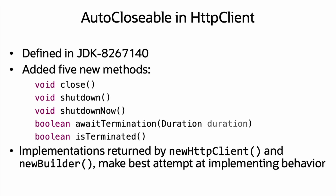The changes to HTTP Client are covered in JBS Ticket JDK-8267140, and five new methods were added: close, shutdown, shutdown now, await termination, and is terminated. Each can be implemented to handle how underlying resources are closed, such as ensuring connections are not closed while still being used. The implementations of HTTP Client returned by new HTTP Client and new Builder make a best attempt at implementing these methods.